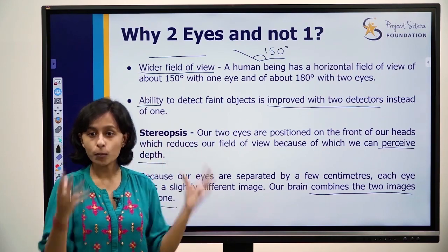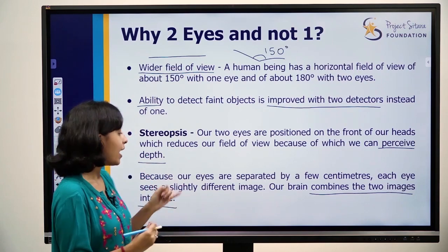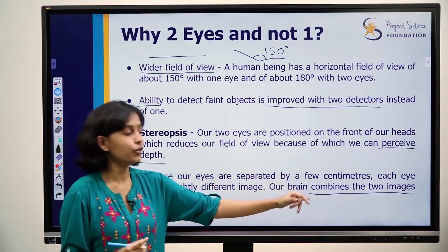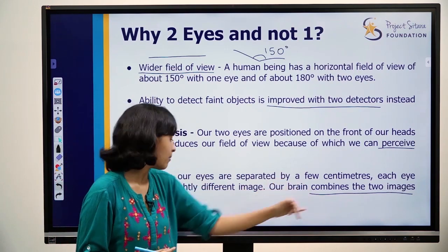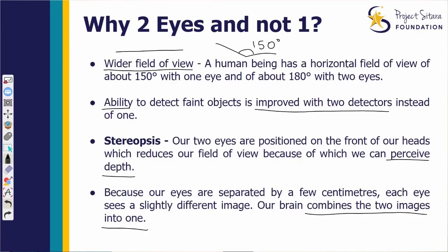To see the three-dimensional quality of an object, the brain takes the two different images and combines them. So we see one three-dimensional object clearly.